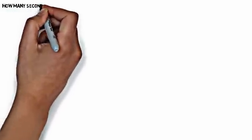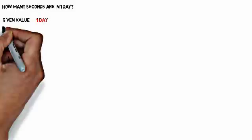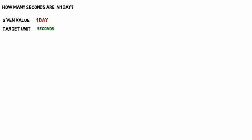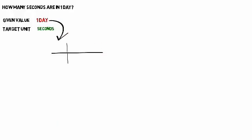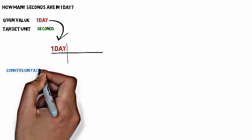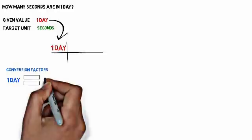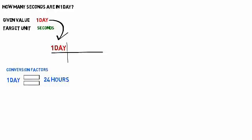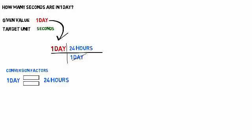Here's the second problem: how many seconds are in one day? The given value is one day and the target unit is seconds. We draw our horizontal and vertical lines and put one day at the starting point. We need to convert days to something, so we say one day is equivalent to 24 hours — day goes in the denominator, 24 hours in the numerator — which cancels out the days.